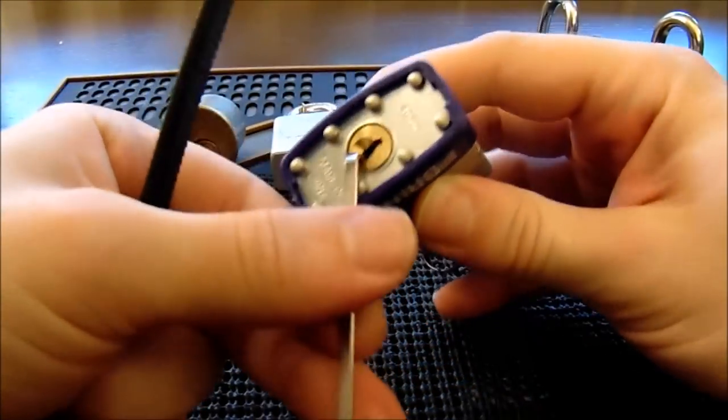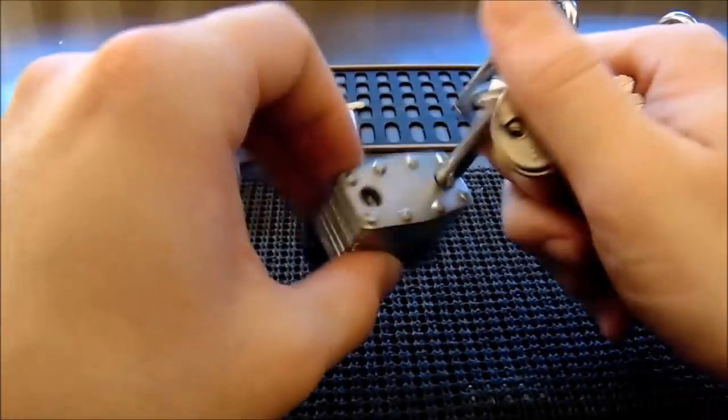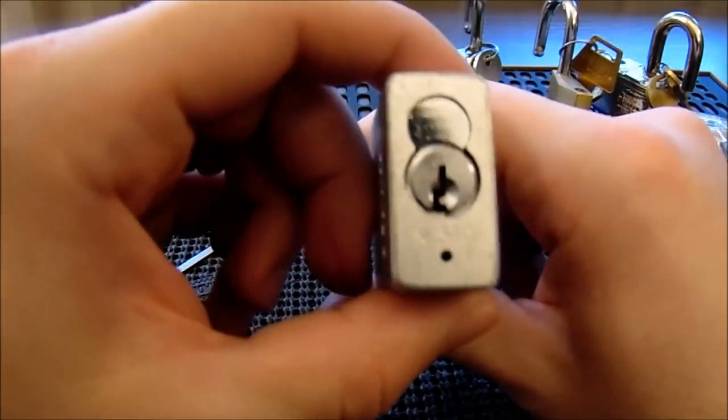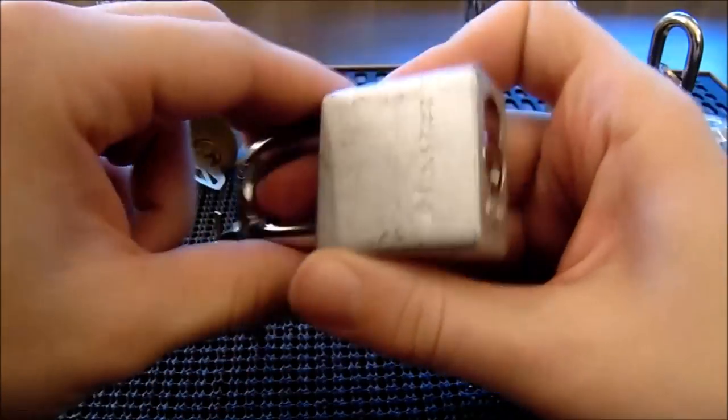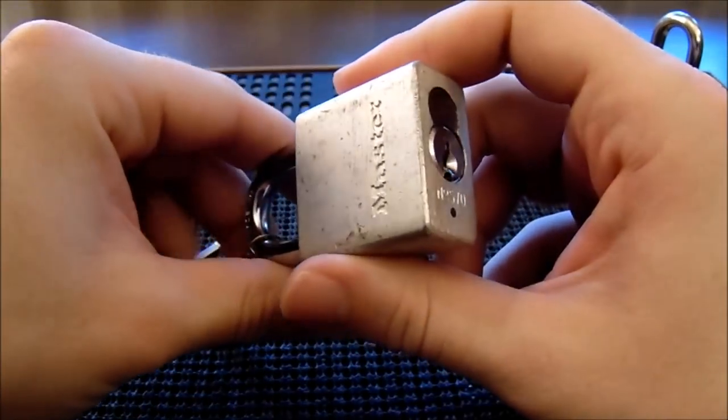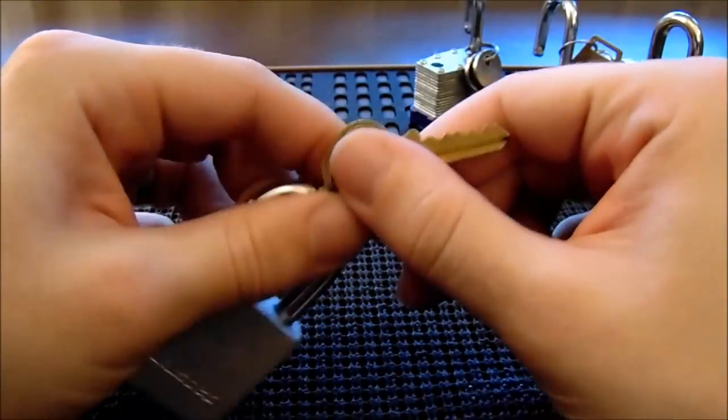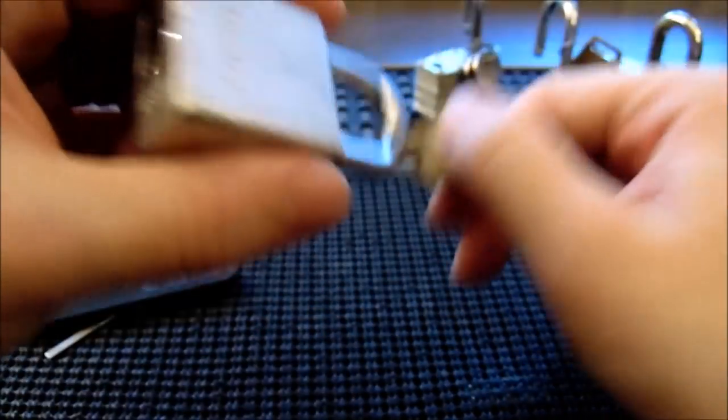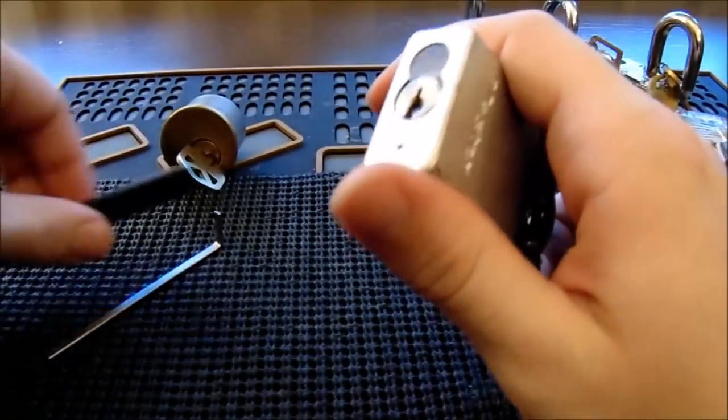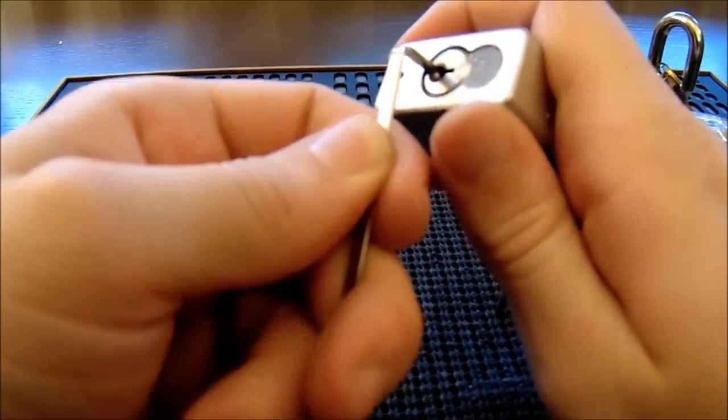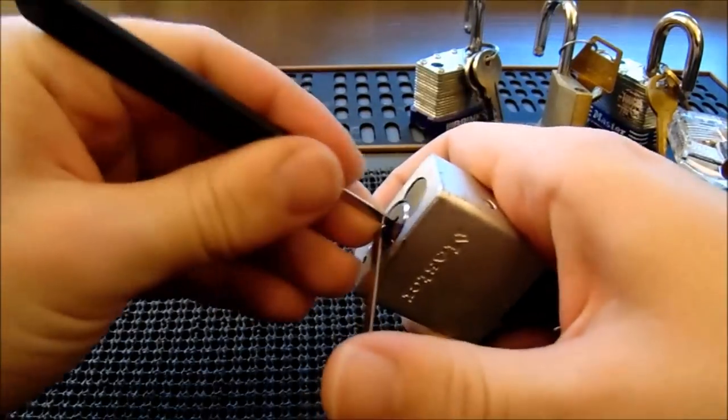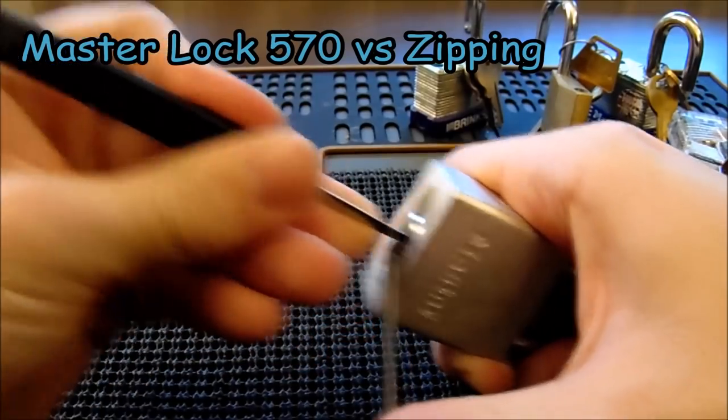So we got a lock with two spools in it. Now here comes a Master Lock model number 570. This is a five pin lock that contains four spools in one standard pin. Here's the bitting on this one, it's not great either, it's pretty flat so that works in our favor. So I'm going to see what it takes to get this one open. One, two, three.